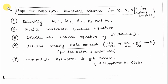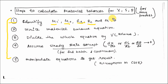Let's discuss the steps to calculate material balances for biomass, substrate concentration, and product concentration for any process — batch, continuous, or fed batch. Step 1: identify mass input, mass output, rate of generation, rate of consumption, and total mass in the reactor. Step 2: write the material balance equation for that process. Step 3: divide the whole equation by volume.